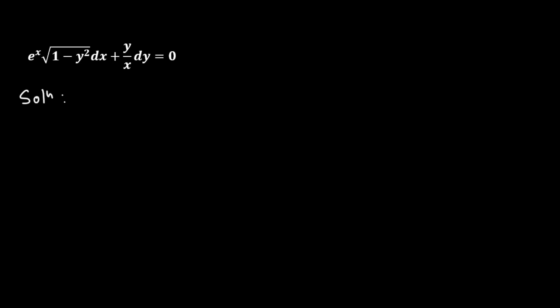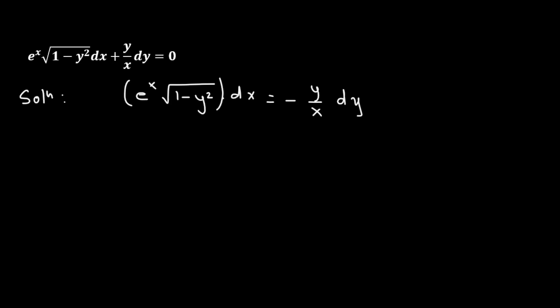We will rewrite this differential equation as e raised to the power of x times square root of 1 minus y squared dx equals to negative y over x times dy. Here what we have to do is make sure that the coefficient of the differential dx is purely a function of x and the coefficient of the differential dy is purely a function of y.